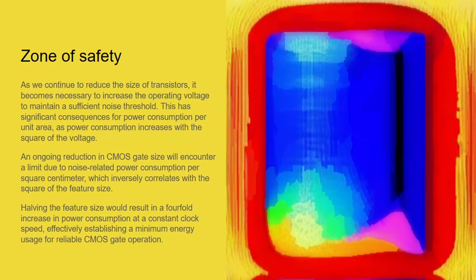We can see these two power laws intersect here. An ongoing reduction in CMOS gate size will encounter a limit due to noise-related power consumption per square centimetre, which correlates with the square of the feature size. Halving the feature size would result — once you reached the threshold of thermal noise — in an increase in power consumption at a constant clock speed. You halve the feature size: four times as much power consumption per area. This would effectively establish a minimum energy usage for reliable CMOS gate operations.